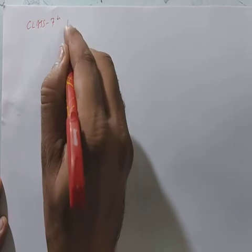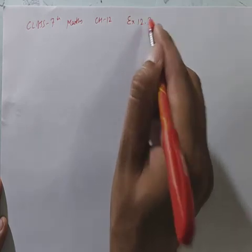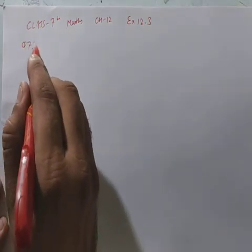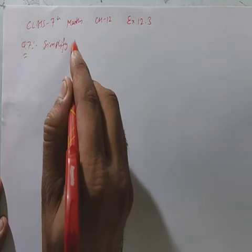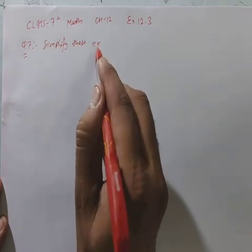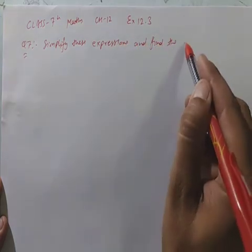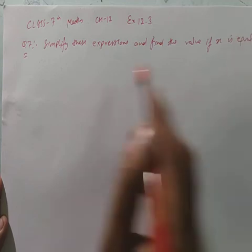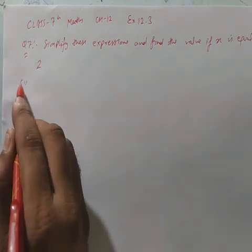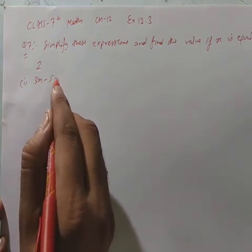Class 7 Maths, Chapter 12, Exercise 12.3, Question 7. Simplify these expressions and find the value if x is equal to 2. First: 3x minus 5 minus x plus 9.